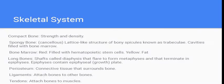In the skeletal system, you have different types of bone. Compact bone is usually for strength and it's dense. Spongy bone — the cavities contain bone marrow. Bone marrow can be either red or yellow: yellow is fat, while red is usually stem cells. Long bones have a periosteum, which is the connective tissue that surrounds the bone. Ligaments connect bone to bone, while tendons connect bone to muscle — something easy to get mixed up on.